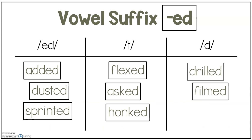Let's check your work. Did you sort them correctly? In the first column we have added, dusted, sprinted — all those vowel suffixes say ED. In the second column we have flexed, asked, honked — all making the T sound. And in the last column we have drilled and filmed, making the D sound.